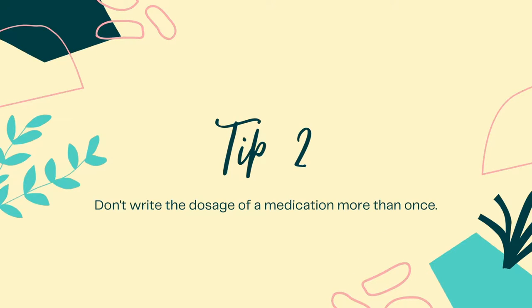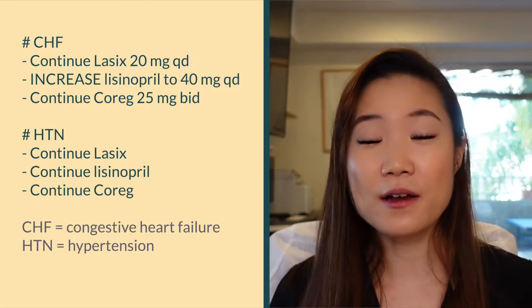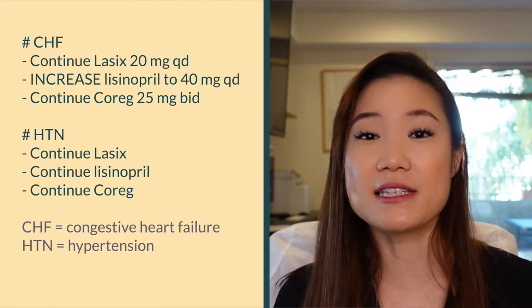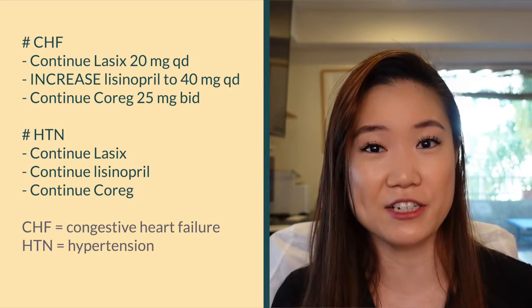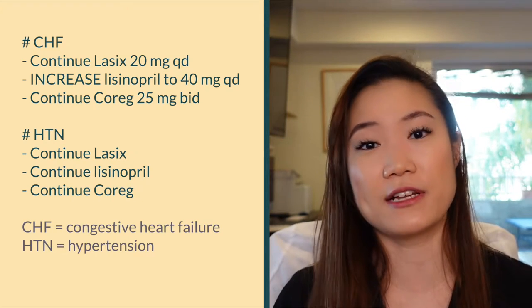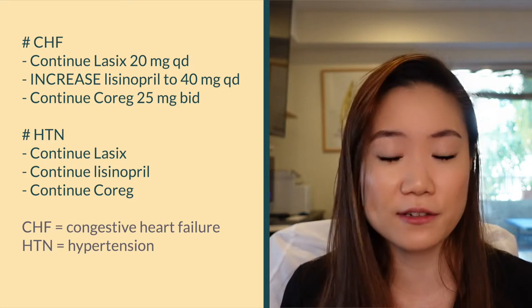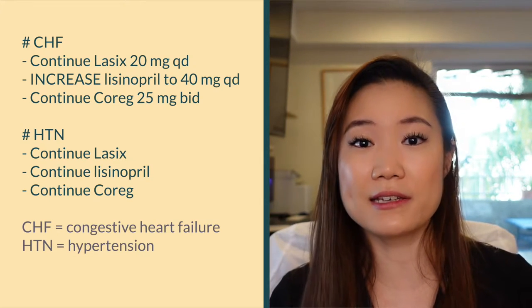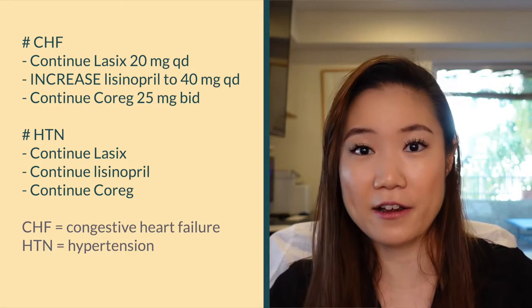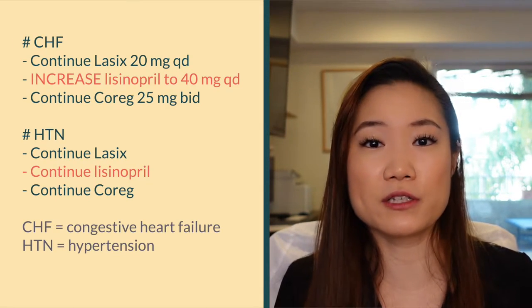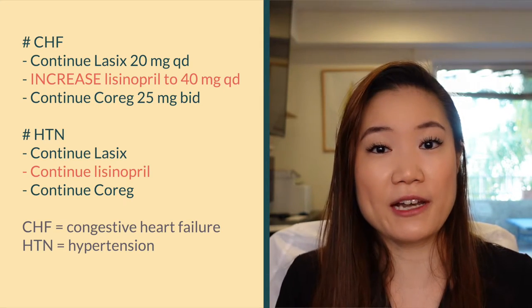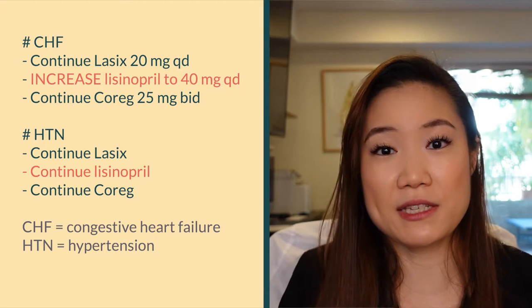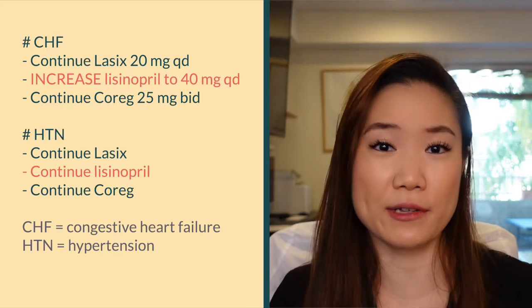Tip number two: don't write the dosage of a medication more than once in your plan. For example, if a patient has heart failure and hypertension and is on lisinopril, lisinopril serves two purposes — it's guideline-directed medical therapy for heart failure and it treats hypertension. If you change the dose, you don't want to update it twice. For the first problem (heart failure), write 'increase lisinopril to 40 mg daily,' and under hypertension just write 'continue lisinopril' with no dose — it's not inaccurate and you don't have to update it.